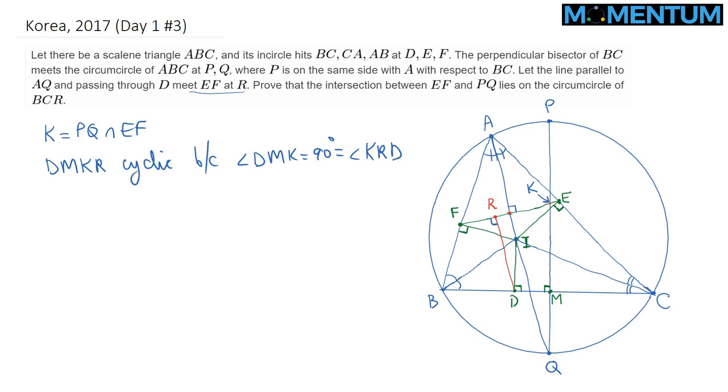Finally, we would like to show that the circumcircle of BCR goes through that point K as well. So for that, I will be using some projective techniques, noticing that this quadrilateral is cyclic gives us the idea of extending EF and BC and let them meet at point T.